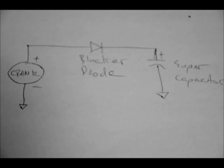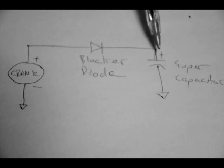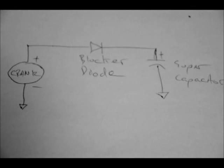When a magnet passes through windings of wire, it creates a voltage and a current through the property called inductive reactance. So when you turn the crank, a DC voltage will go through this blocker diode and start collecting on the positive plate of the supercapacitor.